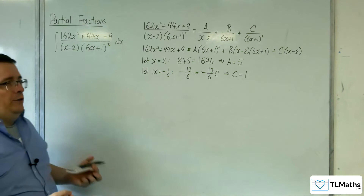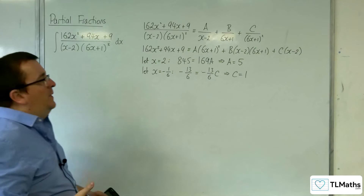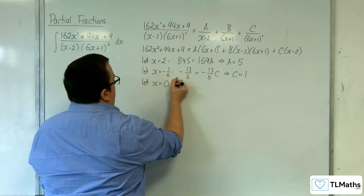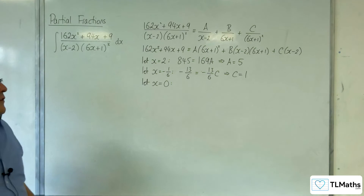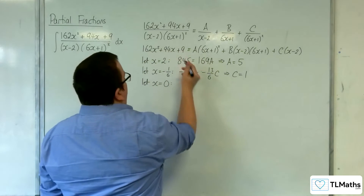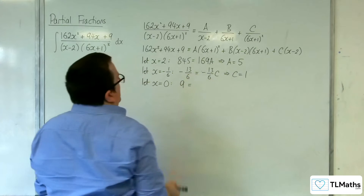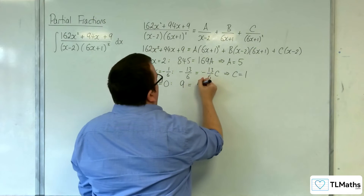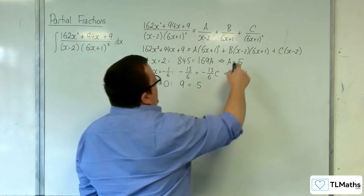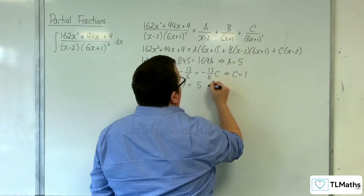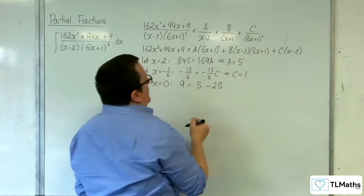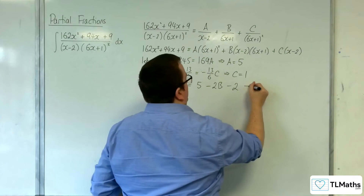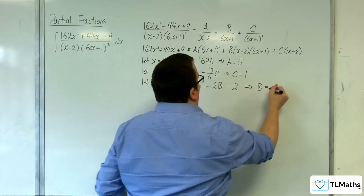Now we've run out of values that we can substitute in to knock out brackets, so let's choose x equals 0 next — that's easy to substitute in. On the left hand side it's just 9. On the right hand side we have (0 + 1) squared times A, so 1 lot of 5. Over here we've got (−2) times 1, so minus 2B. And we have (0 − 2) times 1, so minus 2C.